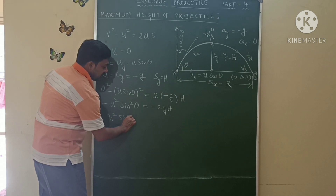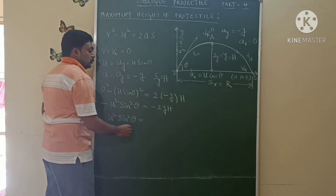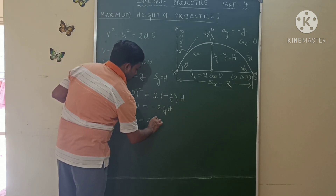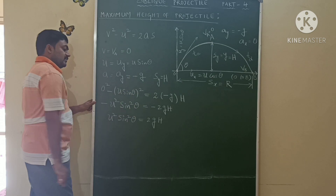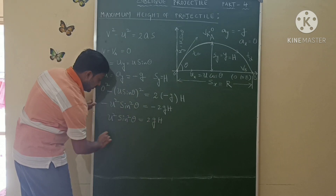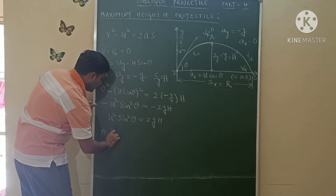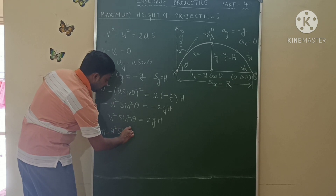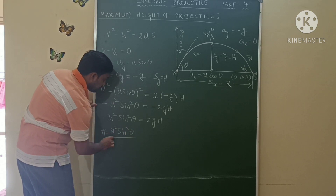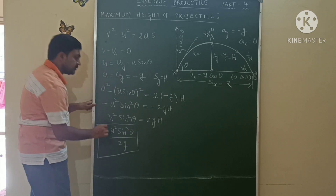After simplification: u² sin²θ = 2gH, so the maximum height H is equal to u² sin²θ divided by 2g. This is the formula for maximum height.